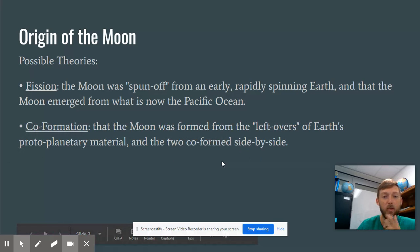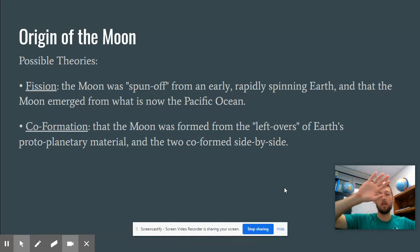Co-formation would be that they just formed at the same time. So again, all this stuff's floating around and gravity pulls it in. So it's like, well, this bigger spot came together and formed the Earth. And then there's some stuff over here that also formed and it just wasn't as much matter. And so it formed the moon, which then got caught in the orbit. So that's the co-formation theory.